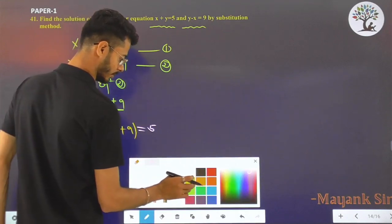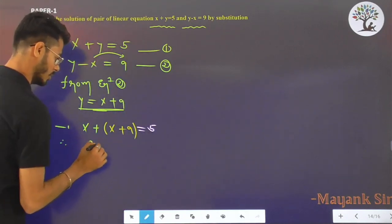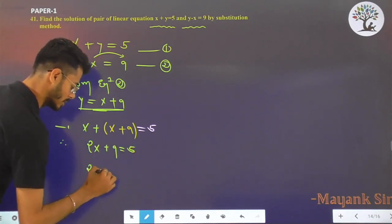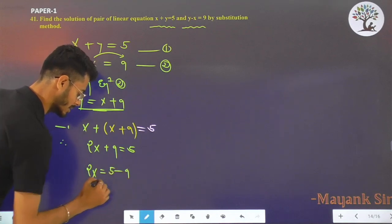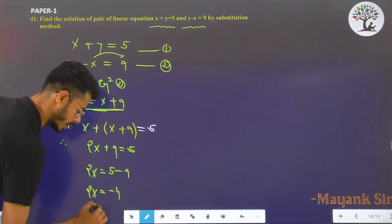So 2x + 9, so 2x equals 5 - 9, 2x equals -4 and x equals -2.